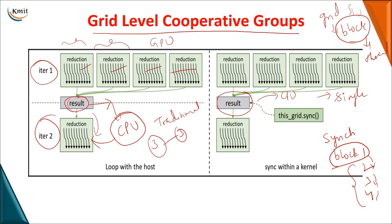To overcome this problem, we go for grid level cooperative groups, where by using the function grid.sync, irrespective of whether threads are present in block 1, block 2, block 3, or block 4, all blocks present in the grid will be synchronized. You need not individually synchronize individual blocks — you only need to synchronize the grid, and all blocks within the grid will be synchronized, along with all threads within each block. This is the other major purpose of grid level cooperative groups.